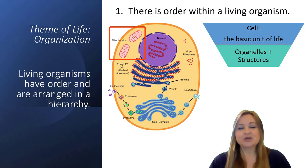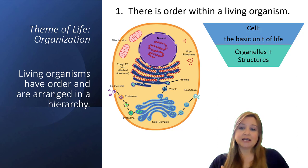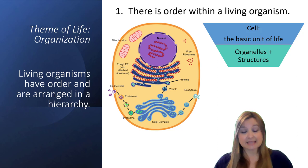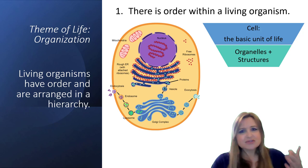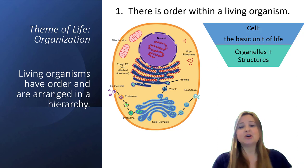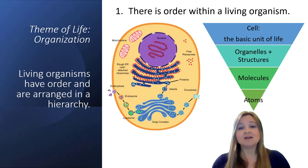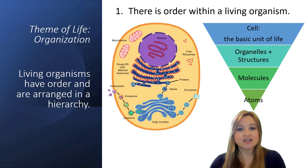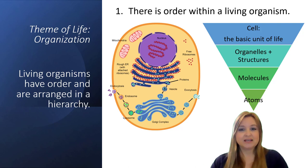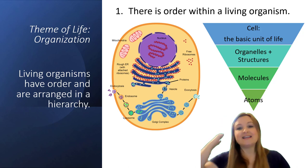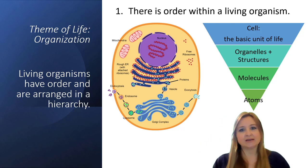Within the cell there is structure: we have organelles and other structures made of proteins like the cytoskeleton. We can drill down further — everything within the cell and the cell itself is made of various molecules, and those molecules are made of atoms. Atoms are things like carbon, hydrogen, oxygen, and nitrogen. In fact, 96% of living things are made of those four atoms.